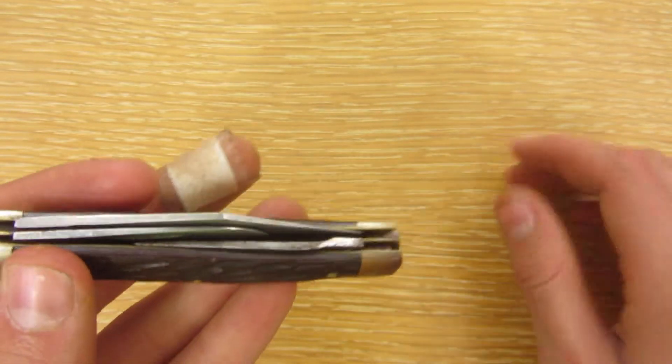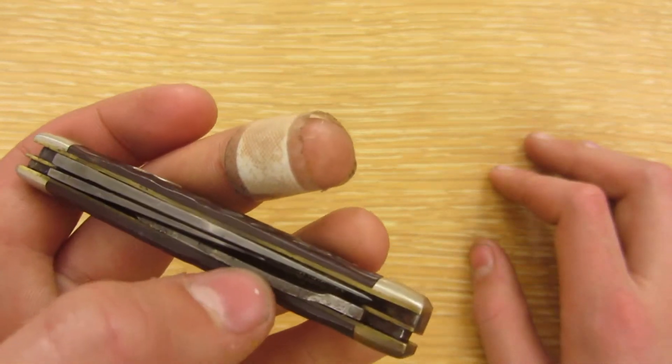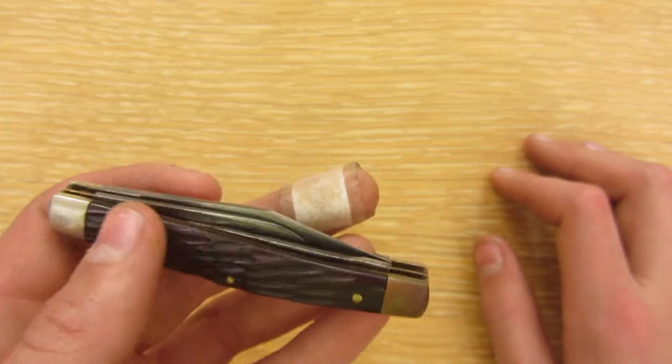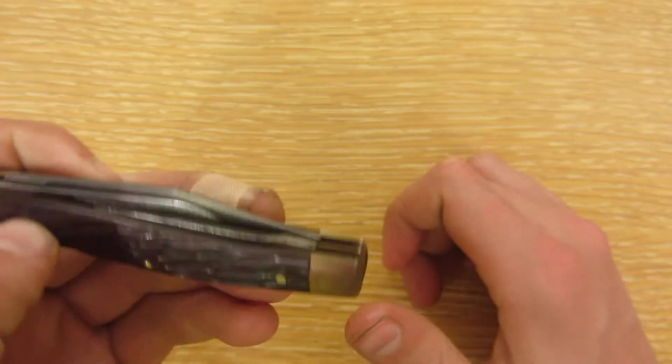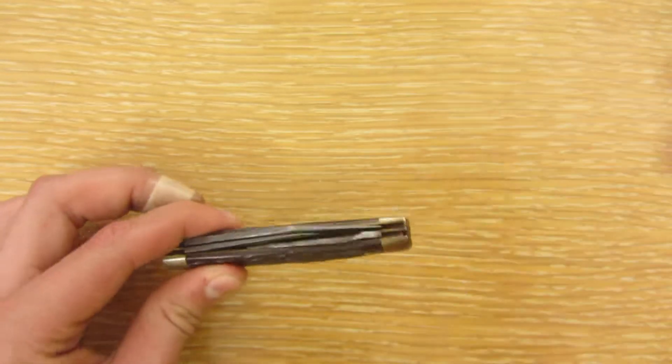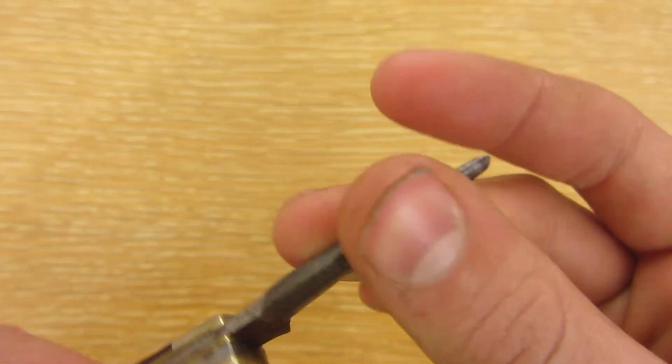And then the final blade, let me get it out. I need a screwdriver to pry it out of there, it's stuck so hard. I don't know if it's just a really strong slip joint, or if there's a reason. Okay, so as you can see, here is the third blade.